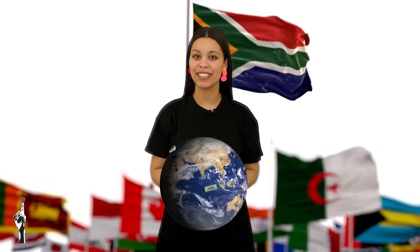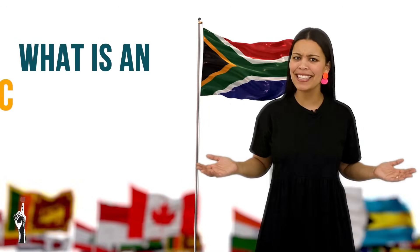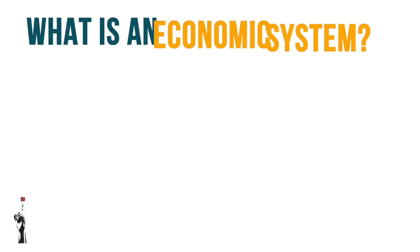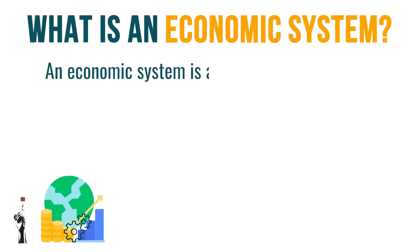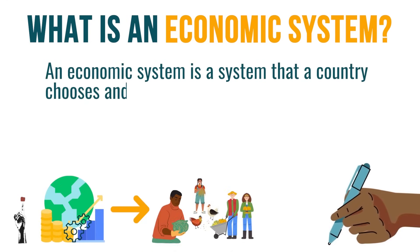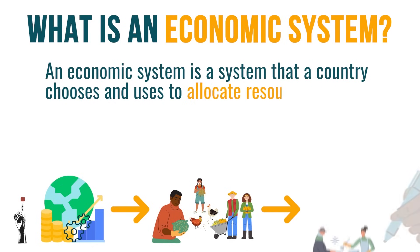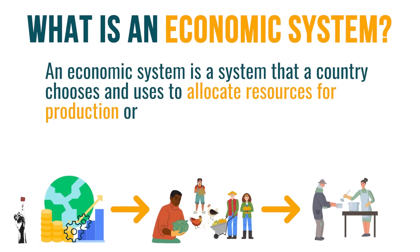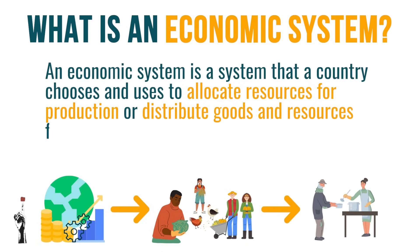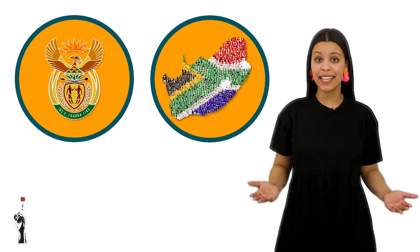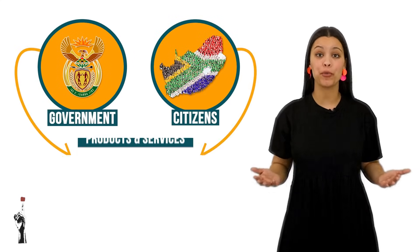Every country in this entire world is subjected to an economic system. So what is an economic system? An economic system is a system that a country chooses and uses to allocate resources for production or distribute goods and resources for consumption by its citizens.